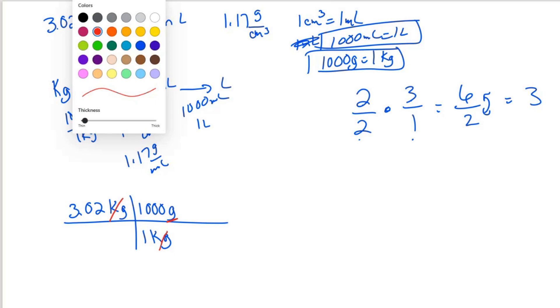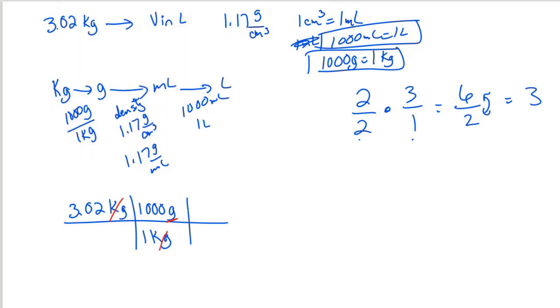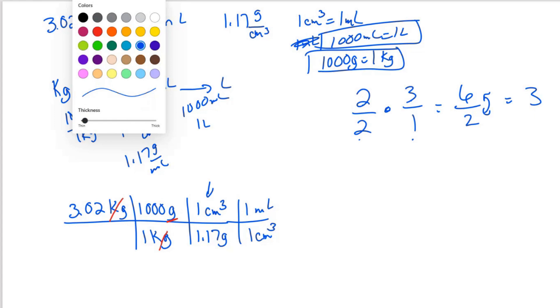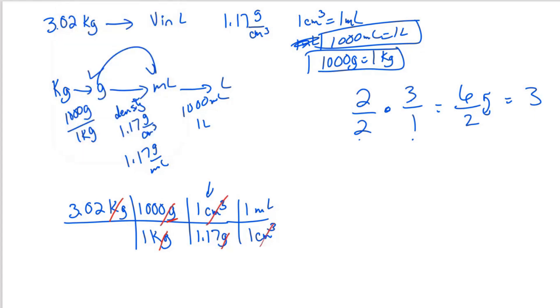So now I can convert grams to milliliters. I can use the density for that. I know that 1.17 grams is 1 cubic centimeter, and 1 cubic centimeter is 1 milliliter. Now I could have just said milliliters right here, but since they gave it to us in cubic centimeters, we'll stick with that. So now grams cancels, cubic centimeters cancels, and I have milliliters.